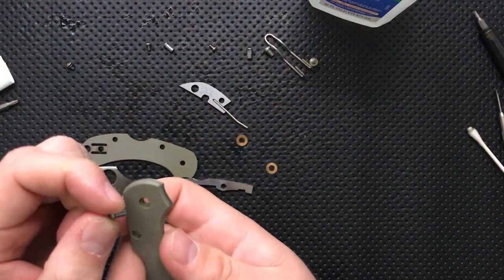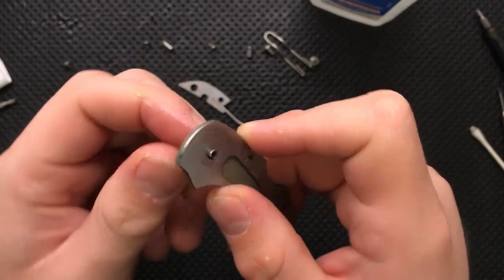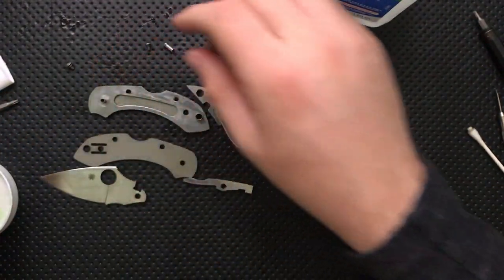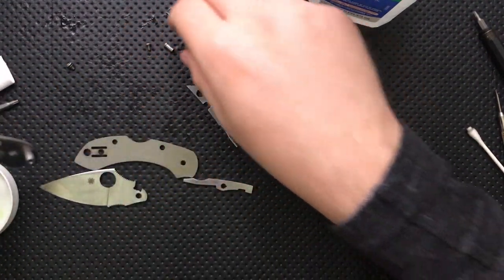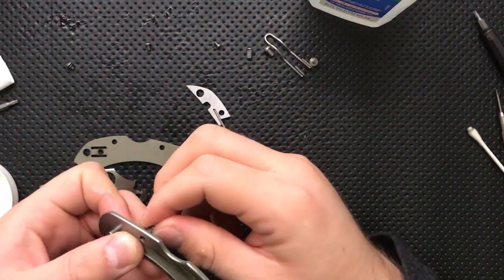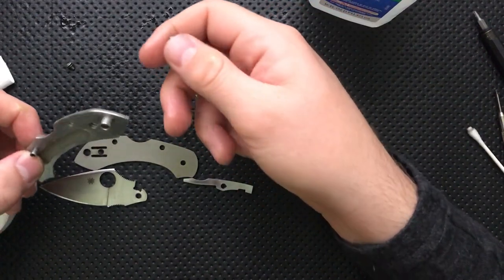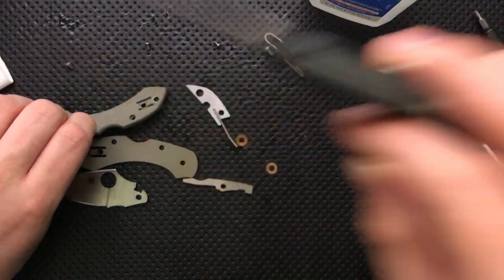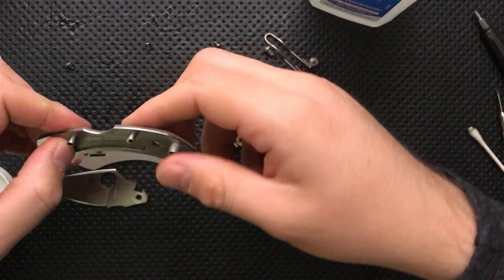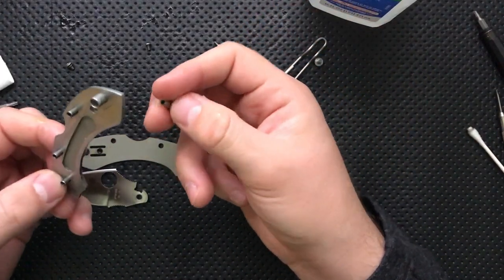You also want to make sure on a knife like this that has symmetrical liners that the proper side is placed up against the blade here. You can see that right here, there is actually some wear from the washer, whereas on the other side, there is not. And so I wanted to make sure that before I did all of my coatings and whatnot, I was using the right liner on the right side here. So there you go. Let's go ahead and drop in the pivot.